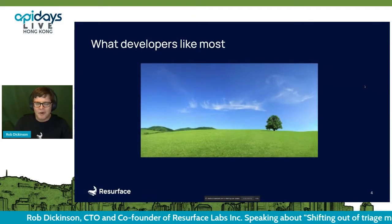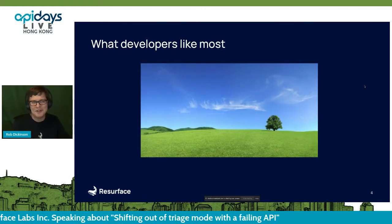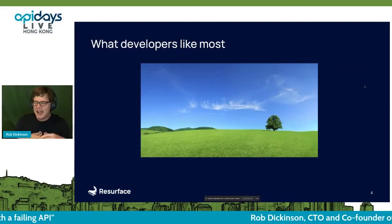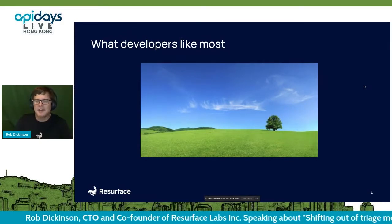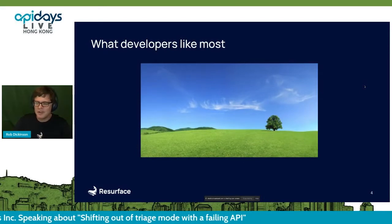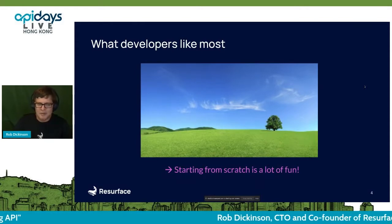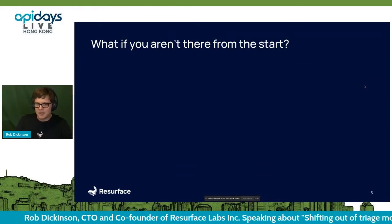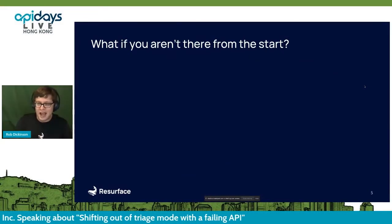In terms of framing the problem: as a developer, what do we like the most? We like to start from scratch — a greenfield project where anything is possible, we haven't made any mistakes yet. So much of what we idolize in development is creating new things, and that's great. Creating new APIs is very exciting; starting from scratch is always a lot of fun.